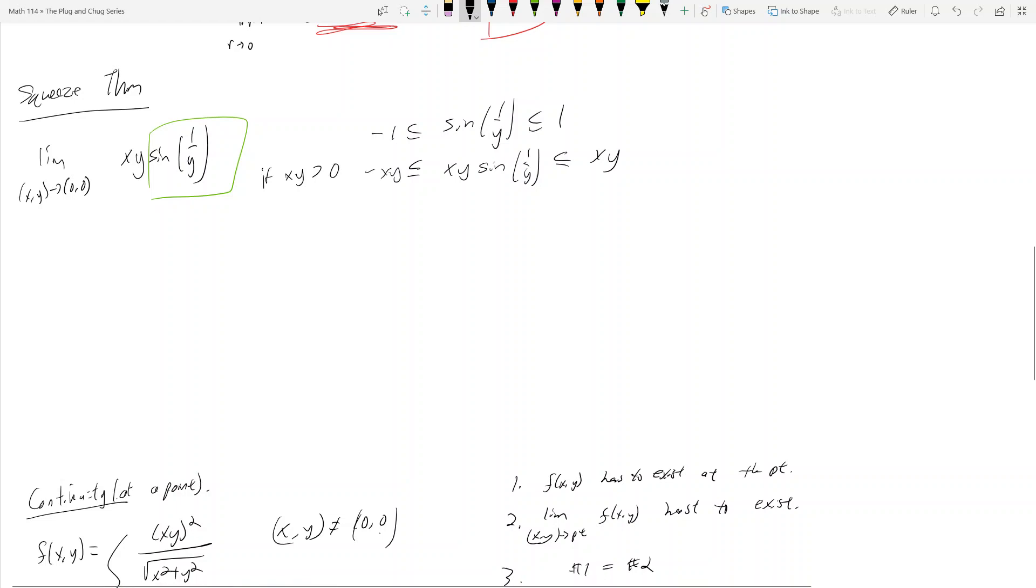And I got this inequality: negative xy is bigger than xy sine 1 over y, which is bigger than xy if xy is negative. So I got these two inequalities for these two cases.